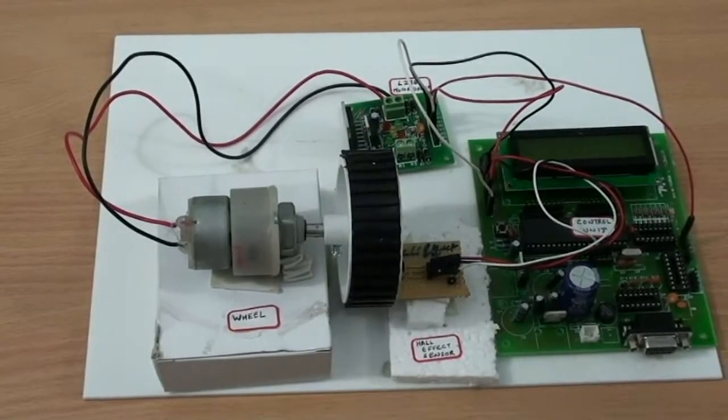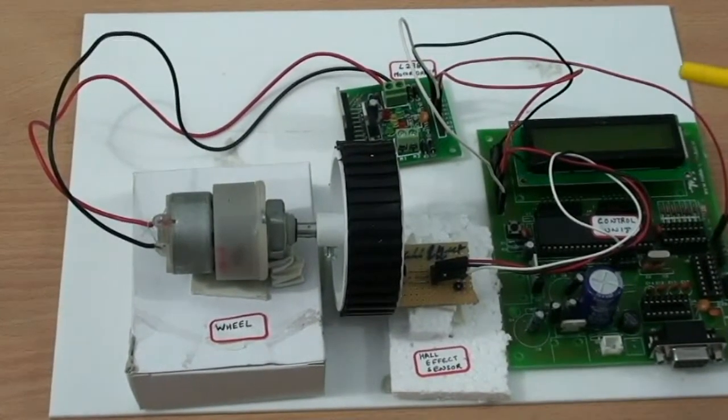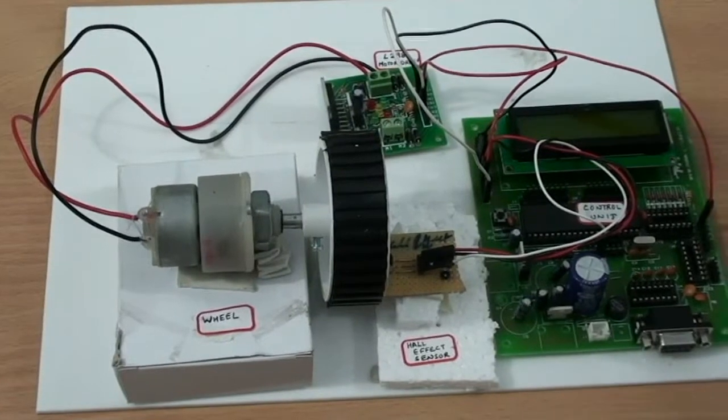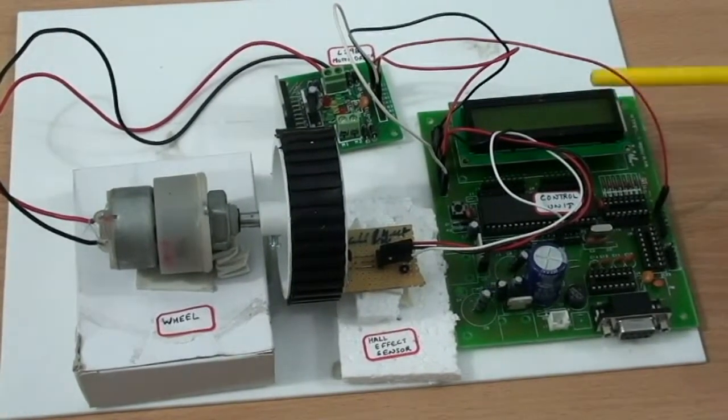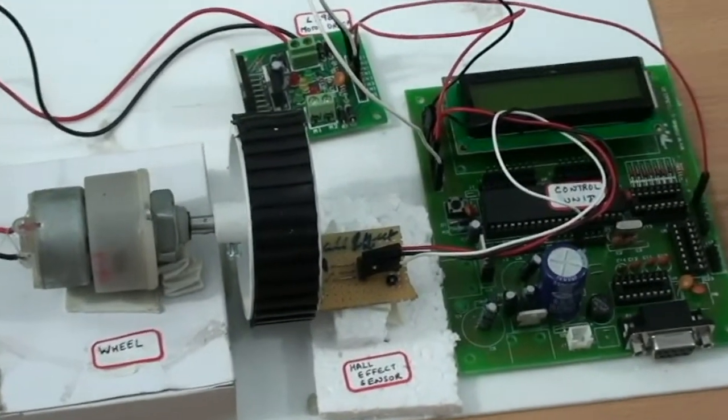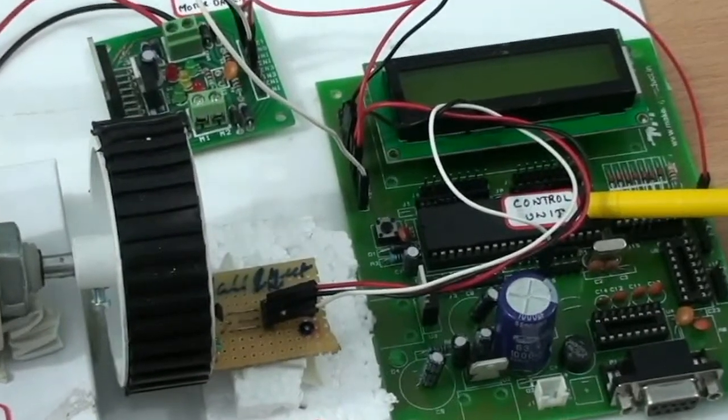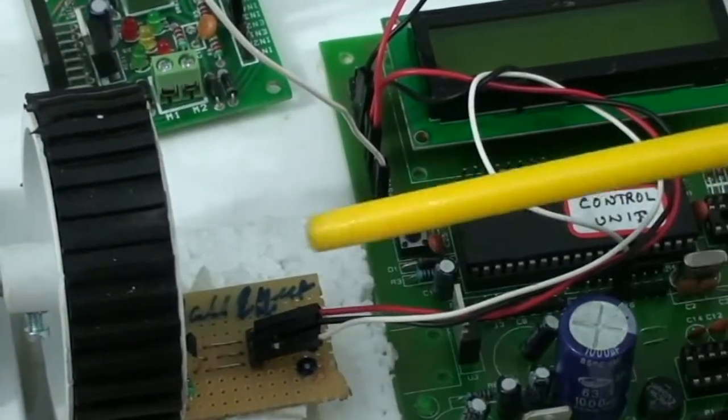This project is a digital taxi meter, basically used in taxis to find out the distance traveled. Let me now tell you the components present in this. This is the LCD, this is the microcontroller, and you can see the hall-effect sensor.